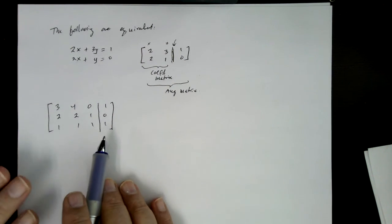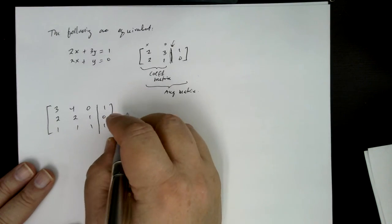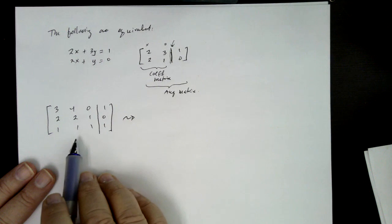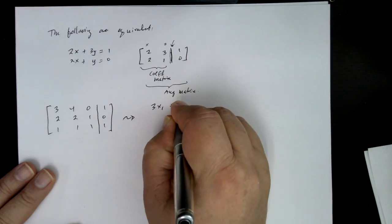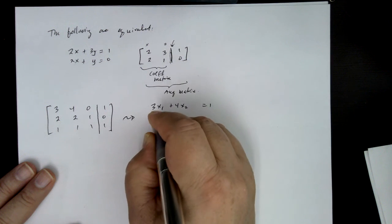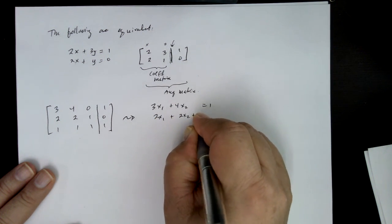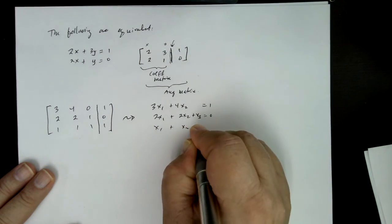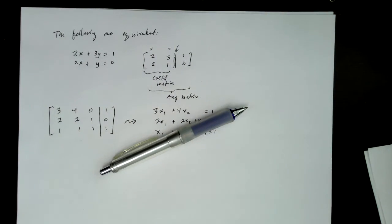And just to wind this up, we only have a couple of seconds left of the time limit here, and then we'll do another video. To rewrite this as a system, you would write as 3x1 plus 4x2 equals 1, 2x1 plus 2x2 plus x3 equals 0, and then x1 plus x2 plus x3 equals 1. And we're out of time, so I'll see you in the next video.